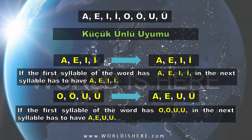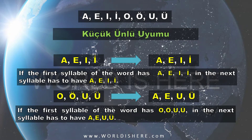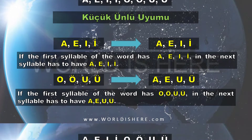Let's summarize küçük ünlü uyumu: if the first syllable has A, E, I, or İ, the next syllable is going to have A, E, I, or İ. If the first syllable has O, Ö, U, or Ü, the next syllable has to have A, E, U, or Ü. Remember? Continue.